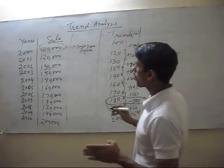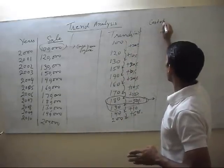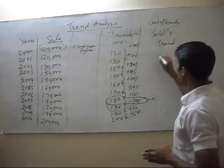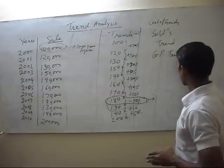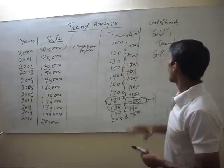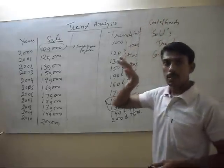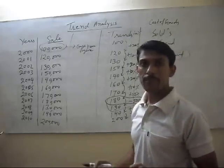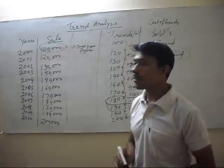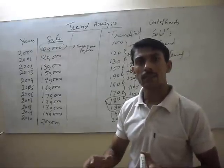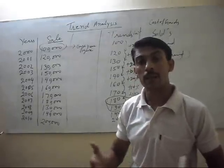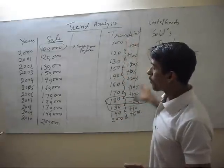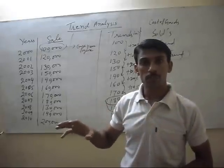Next, we also calculate the cost of goods sold trend and gross profit trend, to see whether our cost of goods sold trend is decreasing and gross profit trend is increasing. Similarly, we can take balance sheet items and calculate the trend of current assets, current liabilities, our capital, and our long-term debts, to check our performance and financial position trends.